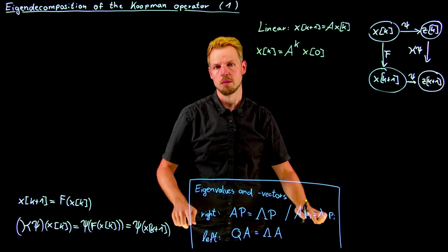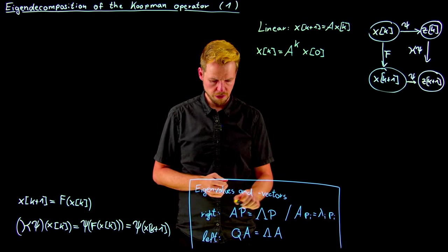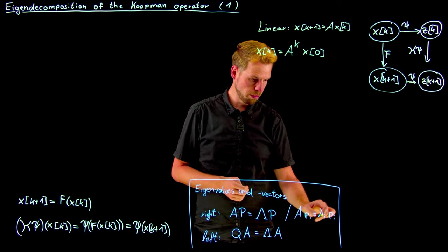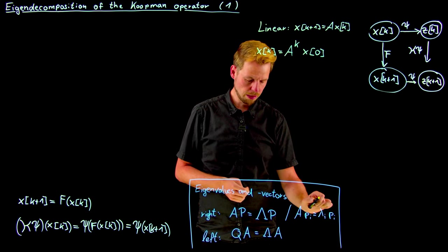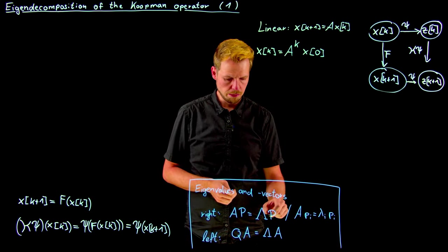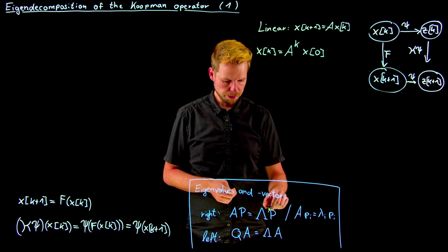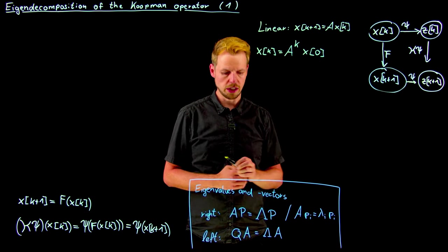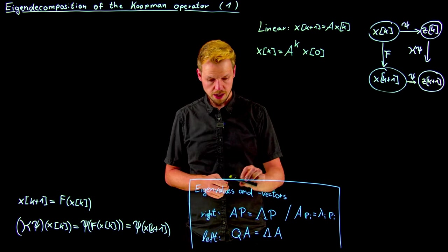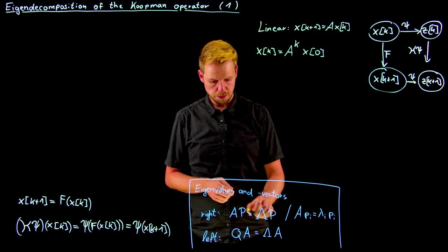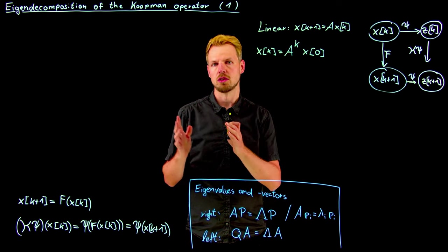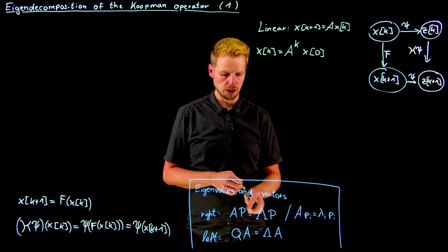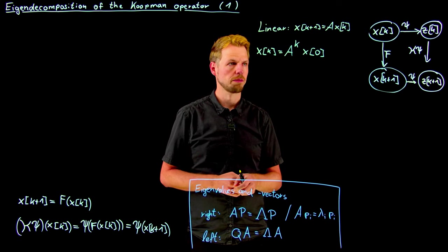So a short recap is shown here in this box where we have right eigenvalue vectors. If this is the equation for an individual pair of eigenvector P and eigenvalue lambda, and this is the matrix notation for this: AP = lambda P, where lambda is now a diagonal matrix containing all the eigenvalues on the diagonal. And we have similarly left eigenvectors where we multiply the eigenvectors from the left side, and the eigenvalues are the same which can be easily shown by transposing these equations.